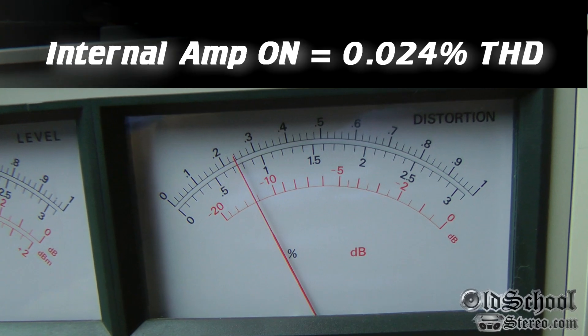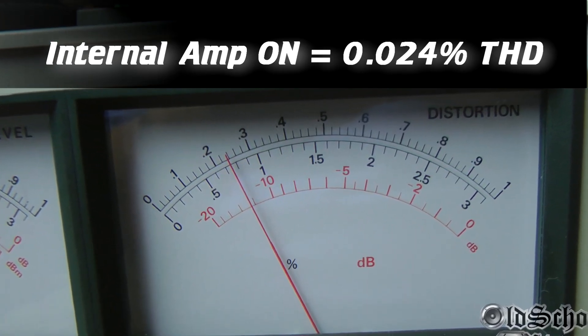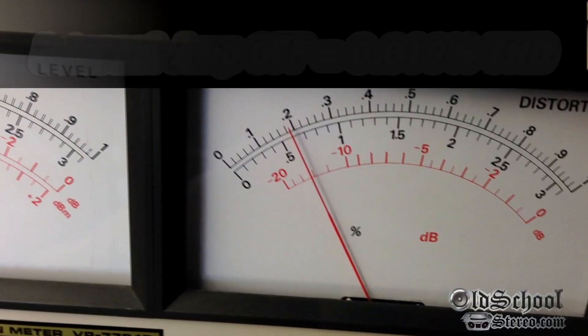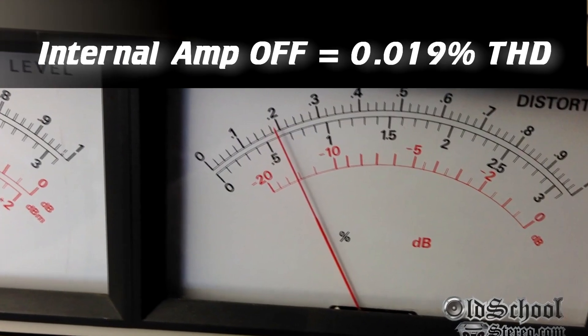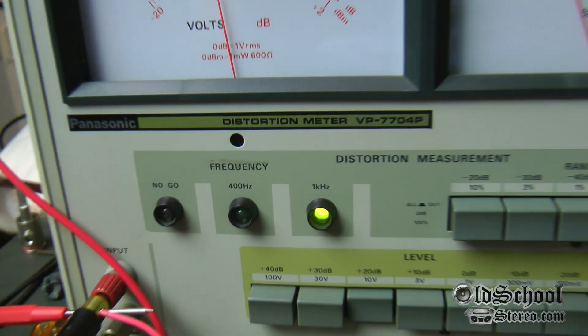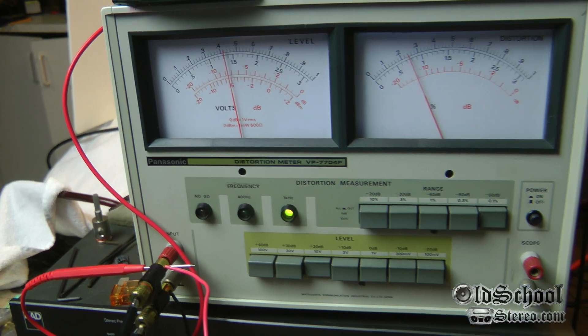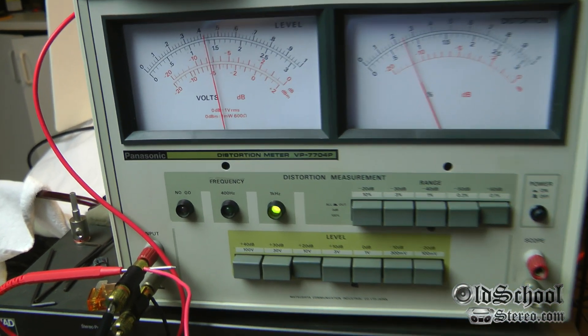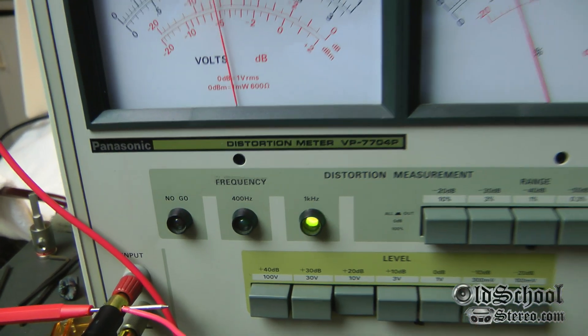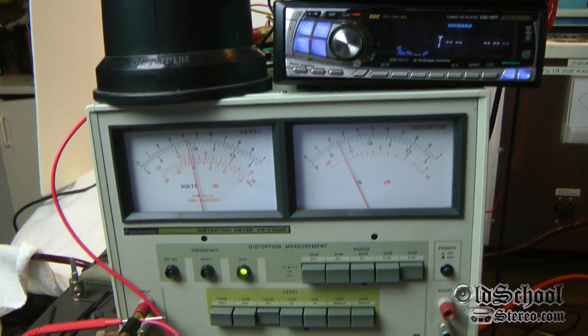Just a neat test here with this new Panasonic VP-7704P. This is going to be a useful tool for the Old School Stereo labs. The only drawback is 400 hertz or one kilohertz - we don't have a lower frequency range for the monoblock amplifiers. But anyway, we'll use it for what we can. Hope you enjoyed it. This is Big D Whiz, Old School Stereo dot com. Until next time, I'm out of here.